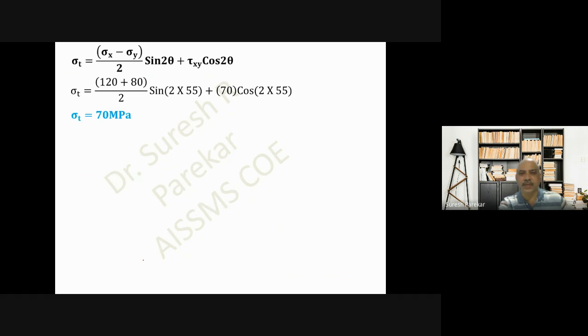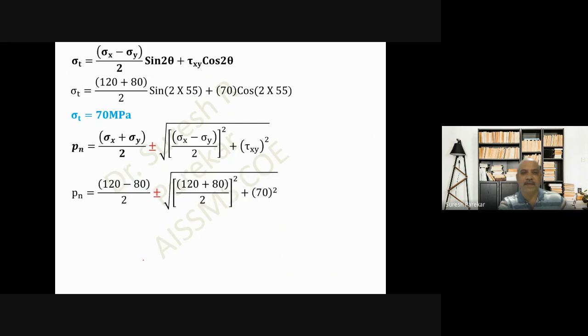Now principal stresses: pn = (120 - 80)/2 ± √[((120 + 80)/2)² + 70²]. Substituting this value we get pn = 20 ± 122.07. From this, pn1 = 20 + 122.07 = 142.07 MPa, and pn2 = -102.07 MPa.